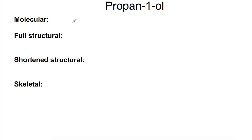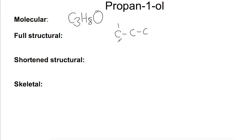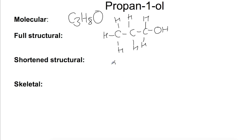Here we've got propan-1-ol. Propan-1-ol has a molecular formula of C3H8O — that doesn't tell you how these atoms are joined together. The full structural formula would show you that you have three carbons joined in a line, and on the first carbon you have an OH group because it's an alcohol, and then the rest have hydrogens. For the shortened structural formula we just shorten that down to a chain.